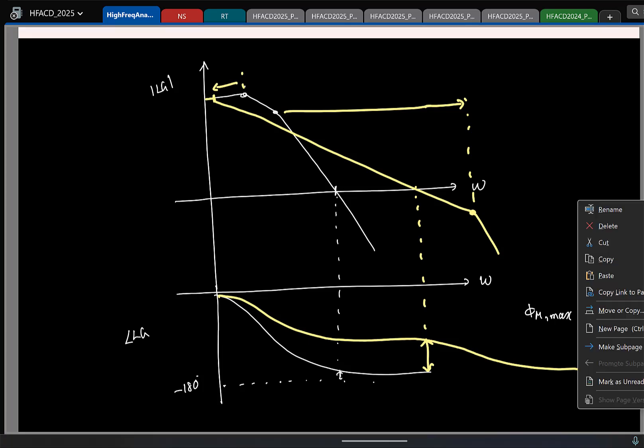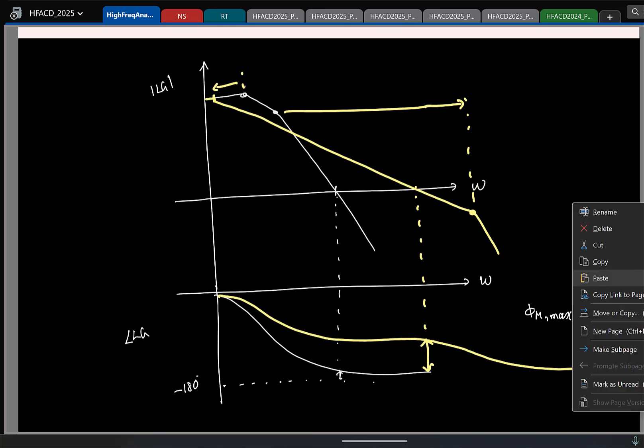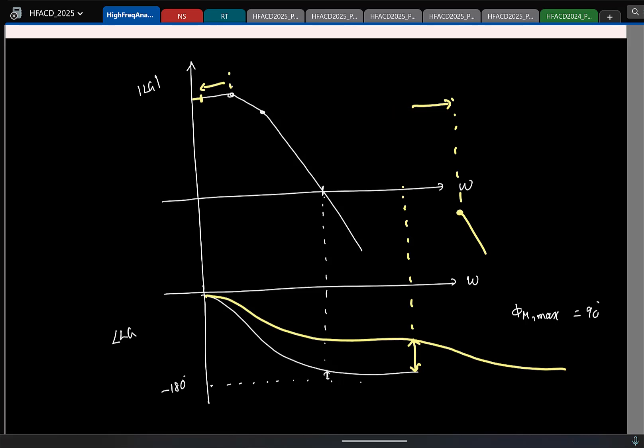So this is Miller compensation. Let us look at the feed forward compensation wherein you add an LHP zero. So in feed forward compensation, you do not change the location of the poles, but you add a zero later. So how will the phase look like? I have two poles. So what will happen to the phase first? It will try to go to minus 180. So let us say it is doing this and then what will happen later? The zero will try to push the phase back to minus 90, something like this. So again, now if you check the phase margin, you will see that you have a sufficient phase margin. Again, the maximum you can get is 90 degrees.